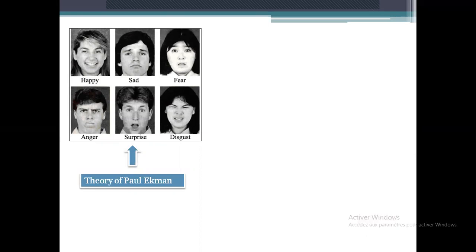To classify emotions we have two main classifications. The theory of Paul Ekman says that there are six main classes of emotions: happy, sad, fear, anger, surprise, and disgust.